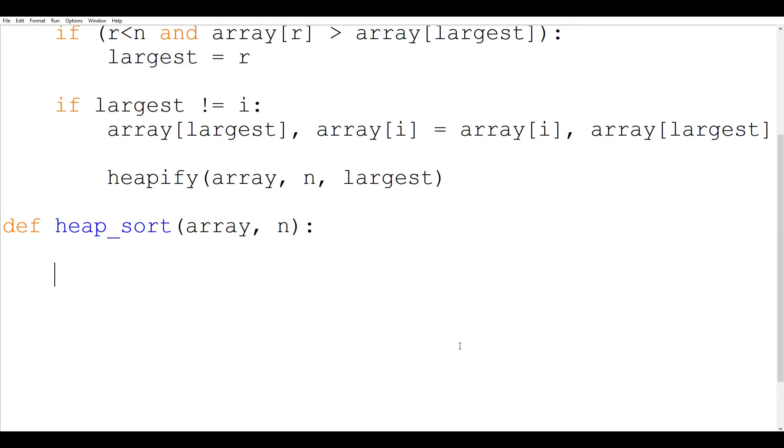So first we are going to use the for loop to iterate through the heap and build a max heap. So for i in range n by 2 minus 1, comma minus 1 and the step value is going to be minus 1 because we are going from the last to the first so we are going to decrement by minus 1. That is why this third argument has come here.